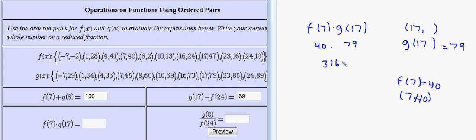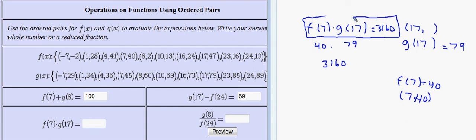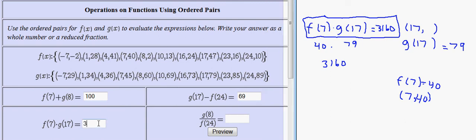Again, if this is a homework or test question, you may want to write the answer along with the question to show your work. I got 3,160 by taking f of 7 and multiplying by g of 17, so the answer is 3,160.